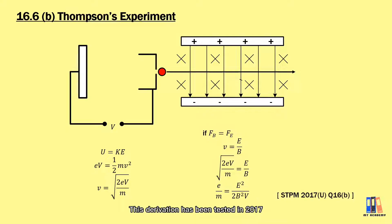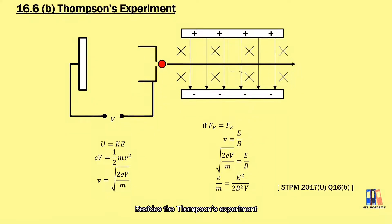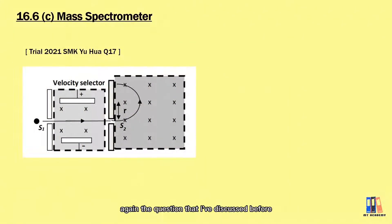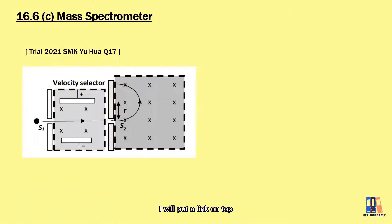This derivation was tested in 2017, so you can check back on the questions and do the derivations again. Besides Thomson's experiment, you can also use the mass spectrometer to determine the ratio of the charge to the mass. We're going to revisit the questions I discussed before from the Yihua trial — I will put a link at the top to those questions if you want to do revision.